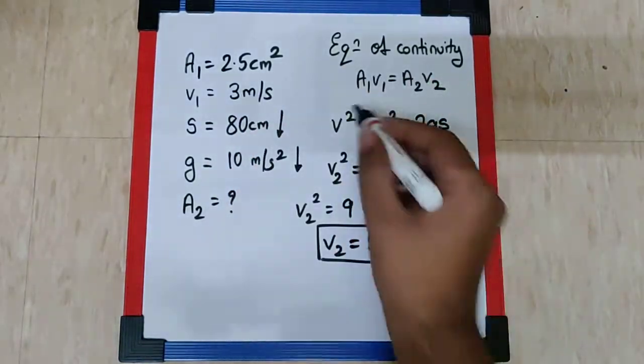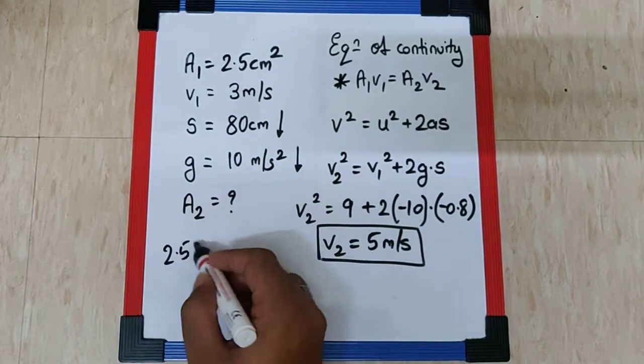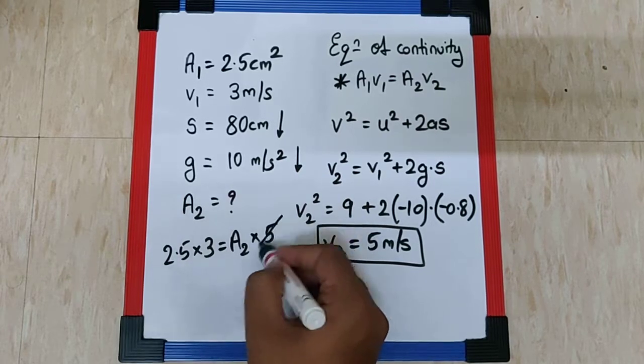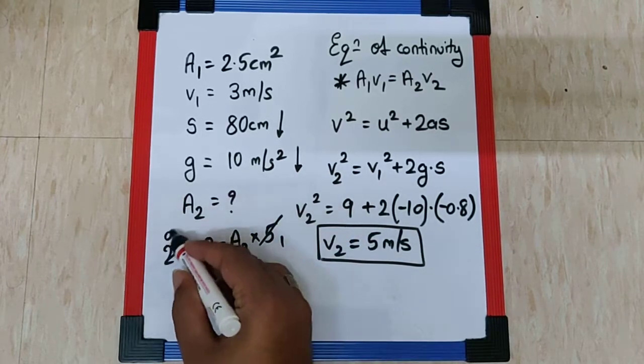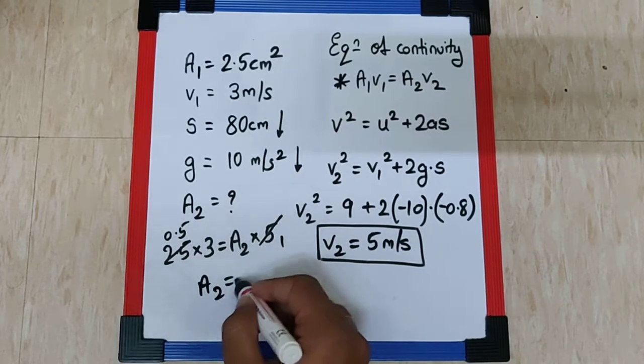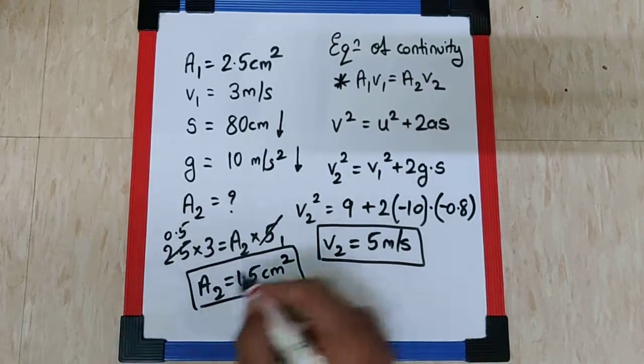So I need not convert this area A1 into meter square and can directly substitute the values in this equation. We get 2.5 into 3 = A2 into 5. Now this gets cancelled with this as 0.5. So 0.5 into 3 is 1.5 centimeter square. And that is your final answer.